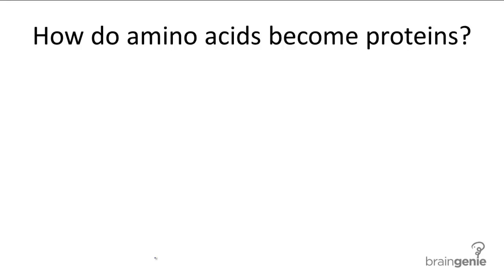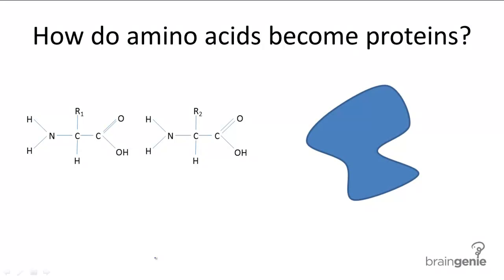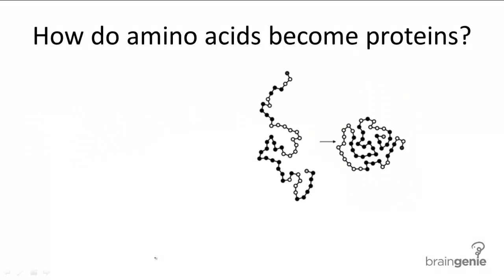How does a protein get from a bunch of amino acids to a structured protein? Here's the general gist: once you have a chain of amino acids, they fold in a particular way to form the protein.